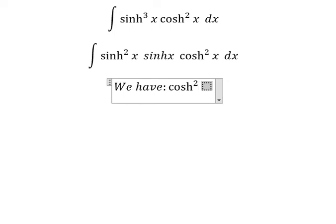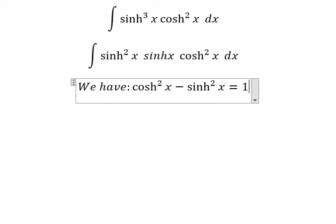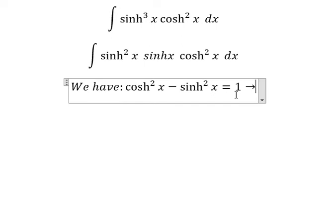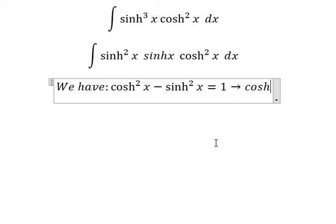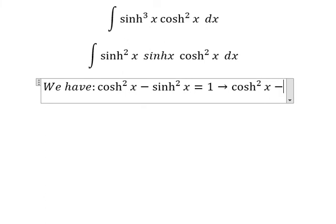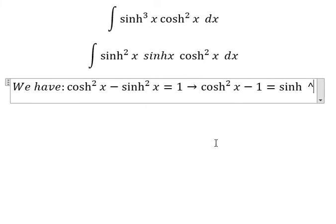Next we have the formula: cosh²x minus sinh²x equals 1. So I will put sinh²x to the right and 1 to the left, and we have cosh²x minus 1 equals sinh²x.